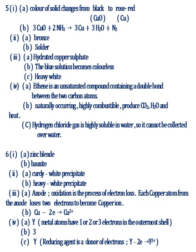Part 4: A Y. Metal atoms have one or two or three electrons in the outermost shell. B Answer 3. C Answer Y. Reducing agent is a donor of electrons.